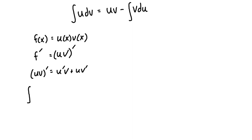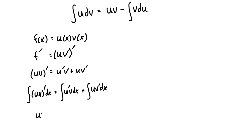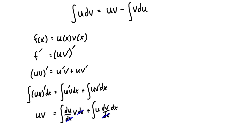If we integrate both sides with respect to x, we take the integral of u'v dx and the integral of uv' dx. The left-hand side simplifies to uv. We can rewrite u' as du/dx and v' as dv/dx, giving us uv = the integral of (du/dx)·v·dx plus the integral of u·(dv/dx)·dx.